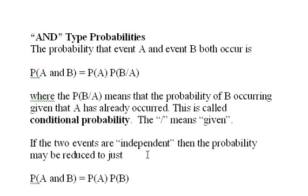If the two events are independent, then the probability may be reduced to just P(A and B) = P(A) P(B), because it doesn't matter whether A has happened in independent events.